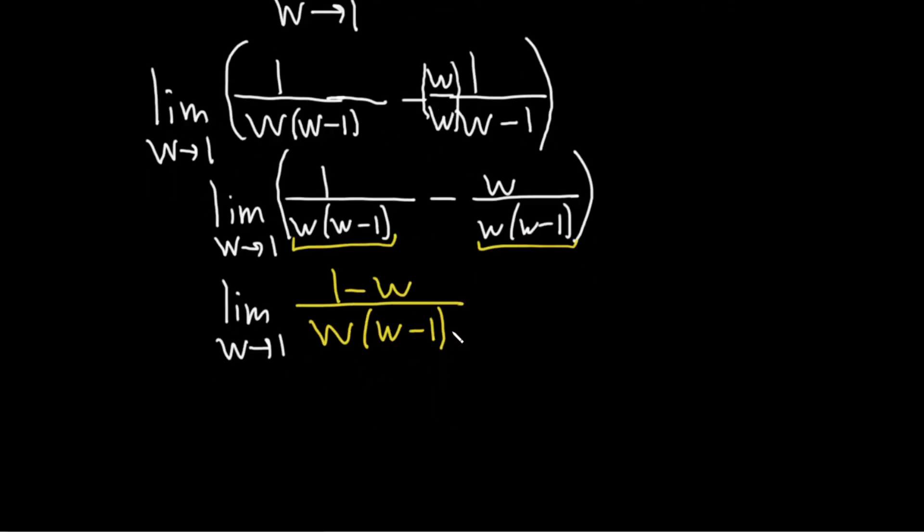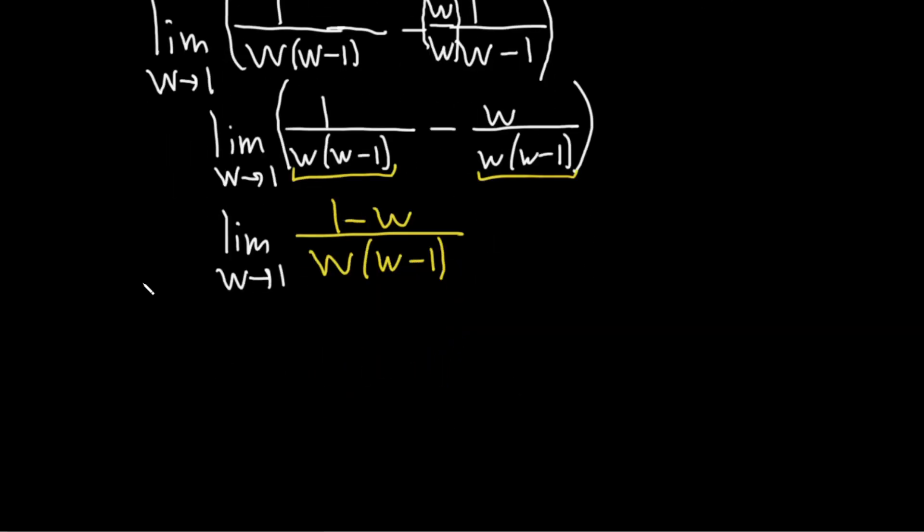And now we're going to use a very powerful technique. This is the limit as w approaches 1. What we're going to do is factor out a negative 1 from the numerator like this. Because when we do that, let's see. Negative 1 times what is going to give us negative w? Well, w. Negative 1 times what is going to give us a positive 1? Well, negative 1.